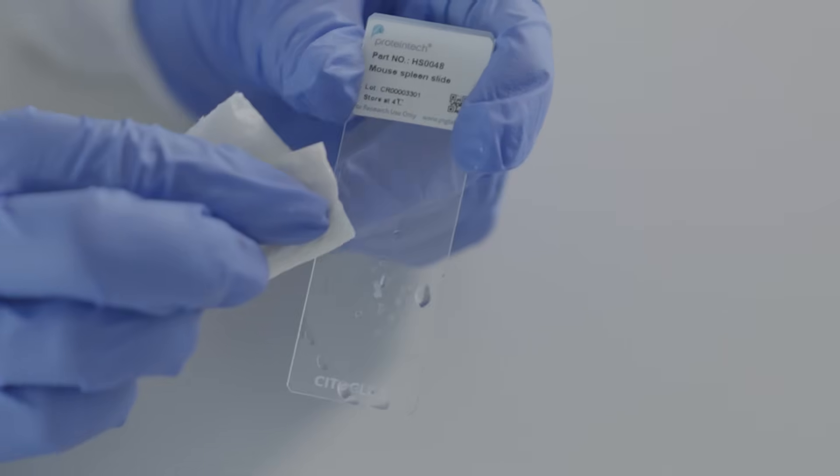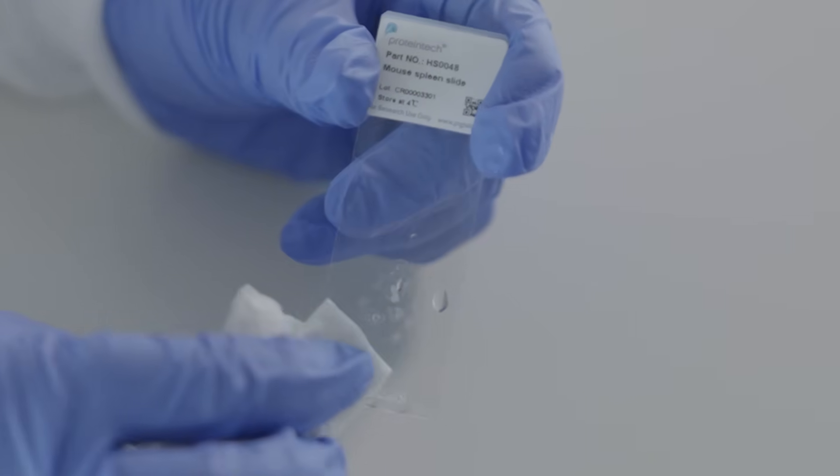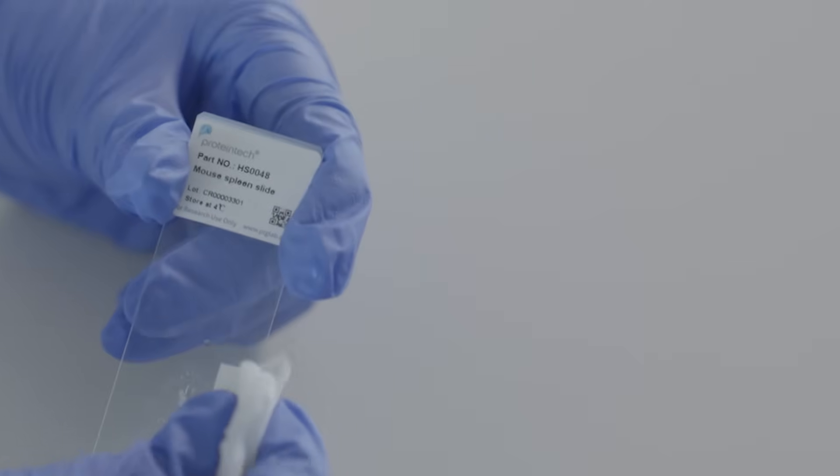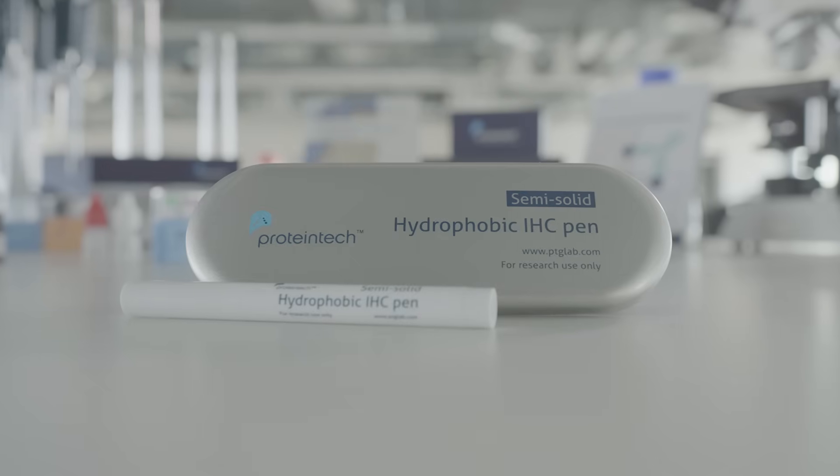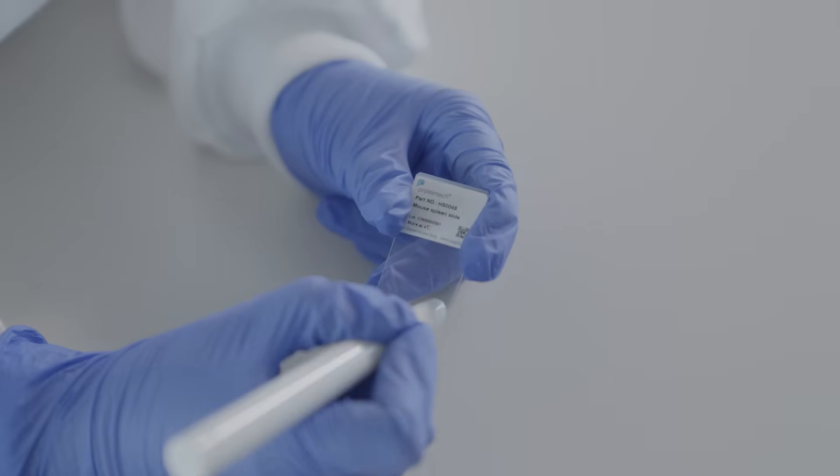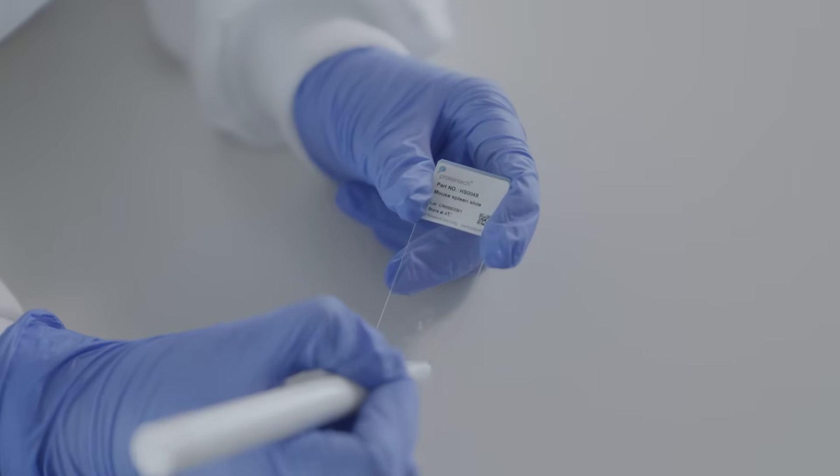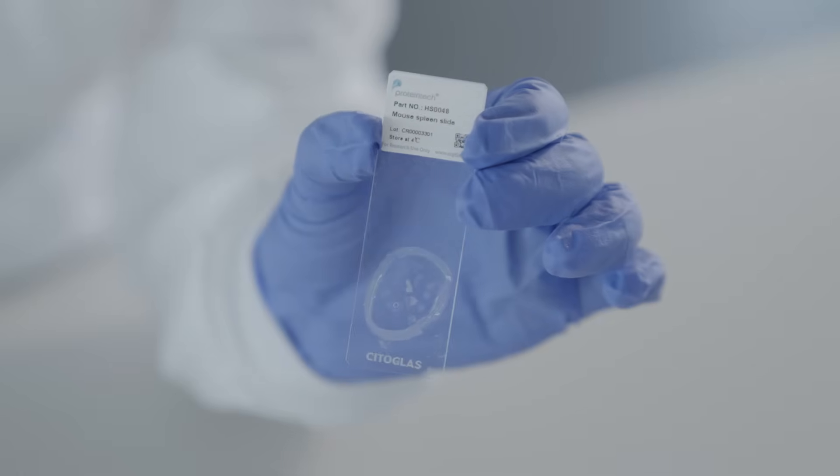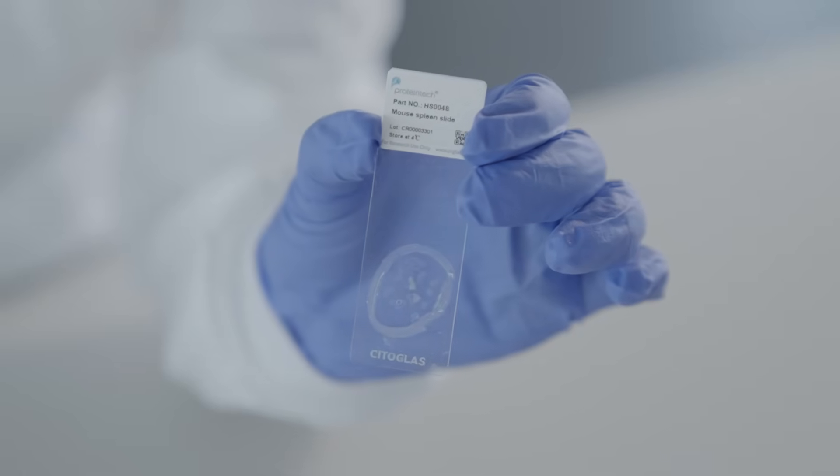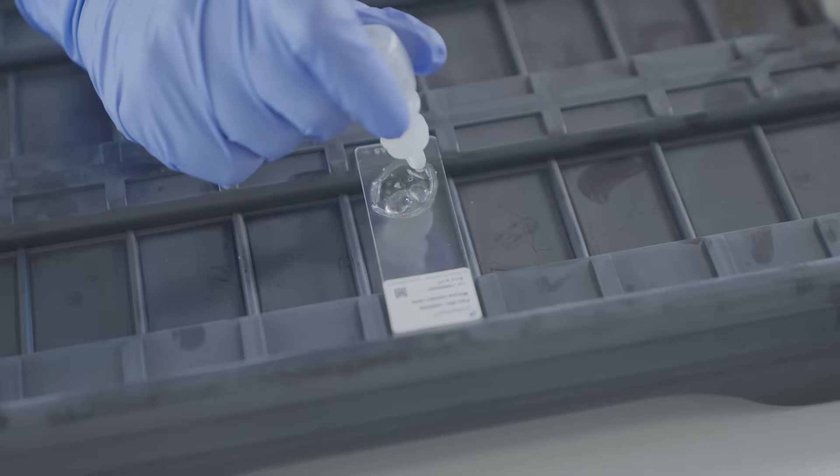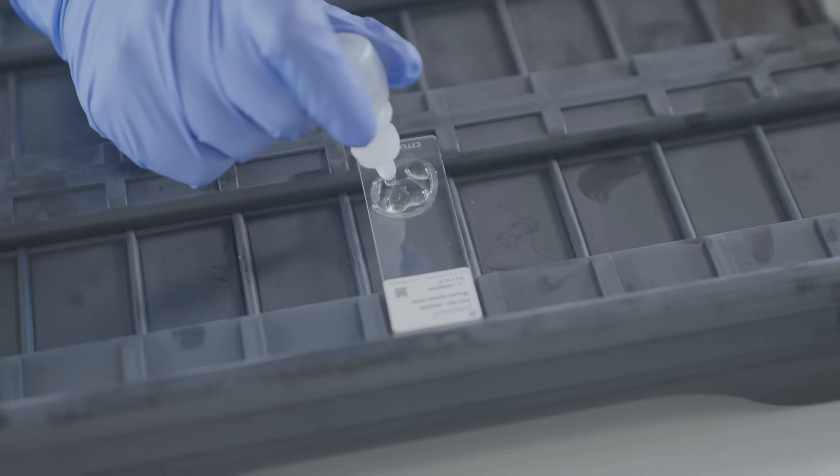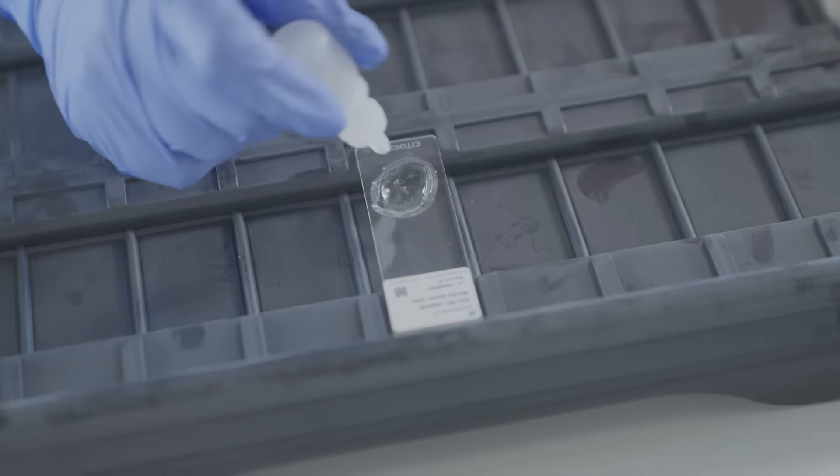Dry any remaining fluid around the tissue with absorbent paper. Use a hydrophobic pen to draw a closed circle around the tissue. This creates a hydrophobic boundary to confine reagents to the tissue. Block each section with blocking solution for 30 to 60 minutes in a humidified chamber.